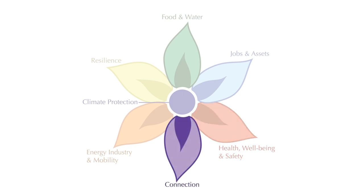This purple petal — the connections petal — is a little less concrete than the others. It refers to connections between people and connections with nature, so a project that increases a feeling of community would merit this petal. The orange petal represents energy and mobility, including the ability to make the things people need and the ability to get around, so public transit projects would be represented by this petal.